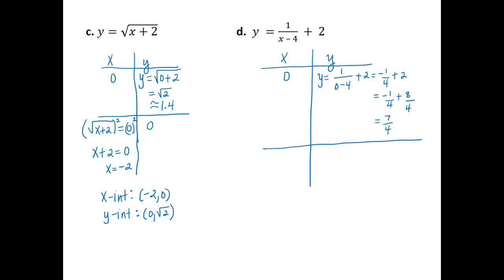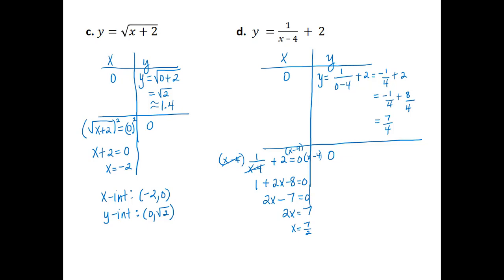Then if we let y equal zero and solve for x, we set 1 divided by (x minus 4) plus 2 equal to zero. We can clear fractions by multiplying each term by (x minus 4), which gives us 1 plus 2x minus 8 is equal to zero. Combining like terms, we get 2x minus 7 equals zero. Adding 7 to each side gives 2x equals 7, so x equals 7 halves. The x-intercept is (7 halves, 0) and the y-intercept is (0, 7 fourths).